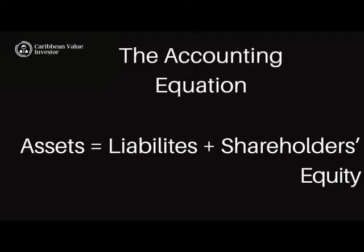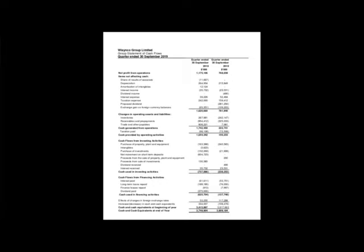The accounting equation is basically telling us that the assets of a company are financed either through debt, which are liabilities, or through shareholders' equity, which would also include those monies deposited by shareholders in the company. For this video, I'm going to be using Wysinko's balance sheet as at the quarter ending September 30th, 2019.